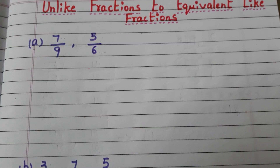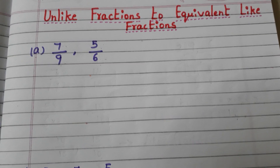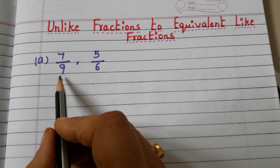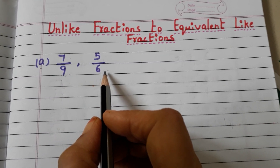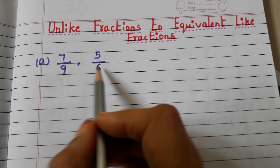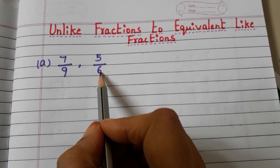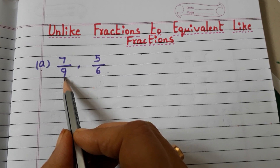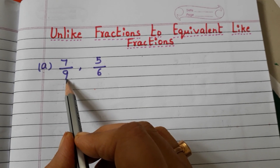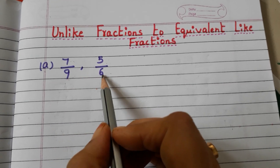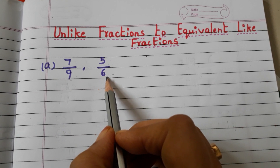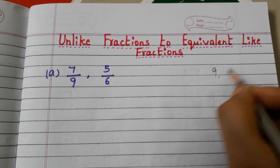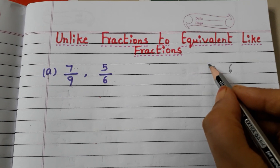Here we have two fractions 7 by 9 and 5 by 6, and these two are unlike fractions. Now we have to make these two fractions into like fractions. Let us see how. First we have to take the denominators. Here the denominator is 9 and here the denominator is 6. Take denominators 9, 6 and find the LCM.